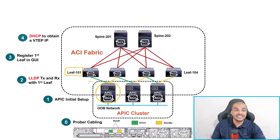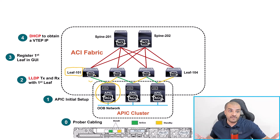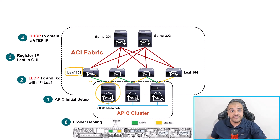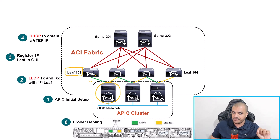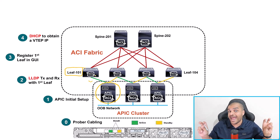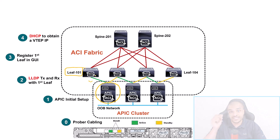After the first leaf is registered, DHCP messages are exchanged — a DHCP discovery from the leaf and a DHCP offer from the APIC — to give that leaf an IP address from something called a VTEP pool, which was configured in the initial setup script. VTEP stands for Virtual Tunnel Endpoint and is related to VXLAN. Now the switch has an IP address and is discovered.